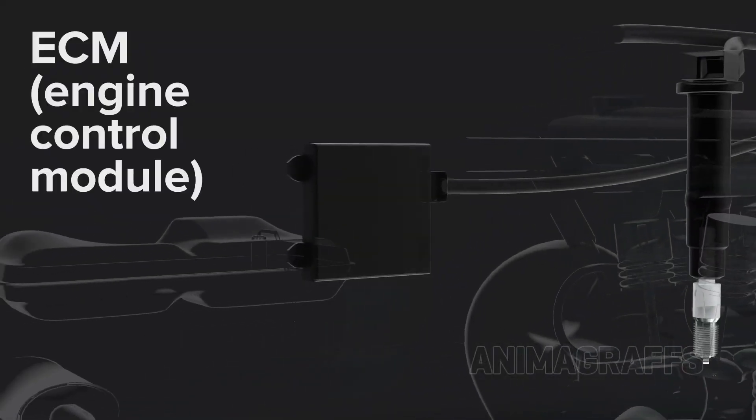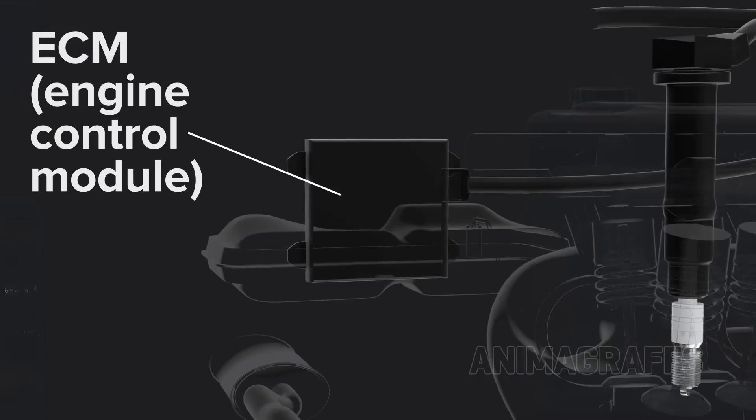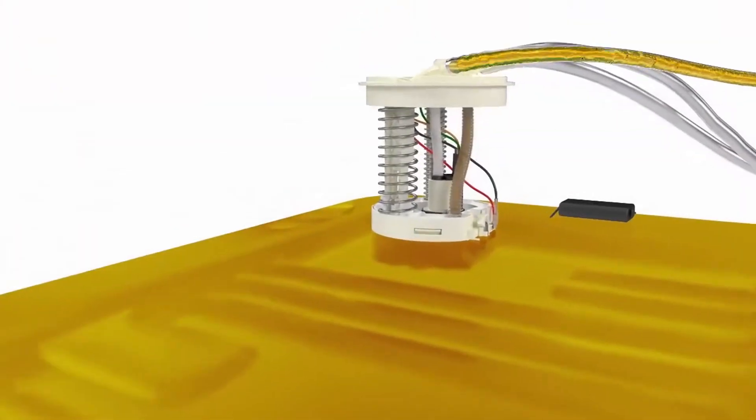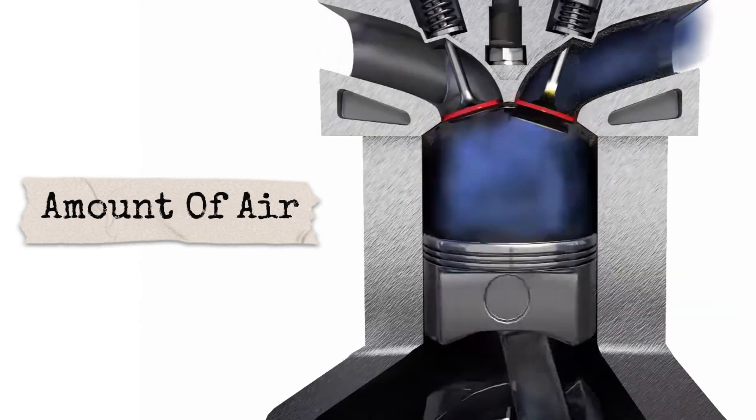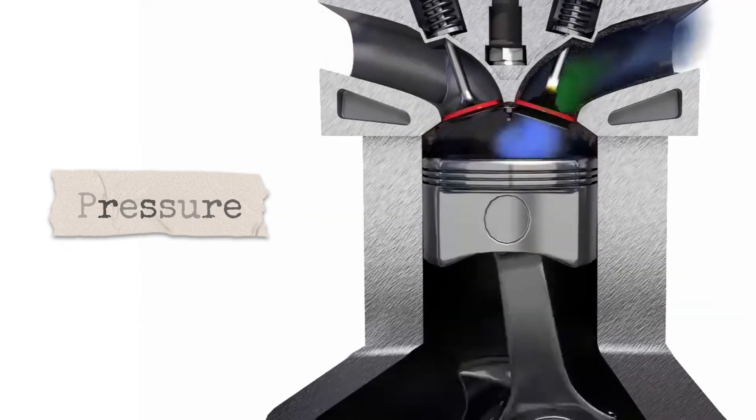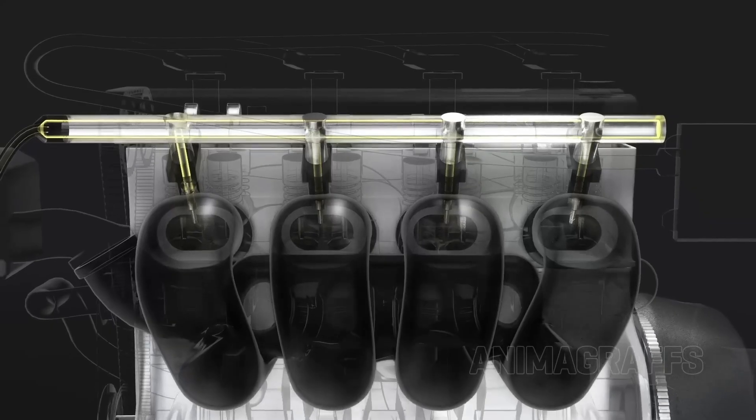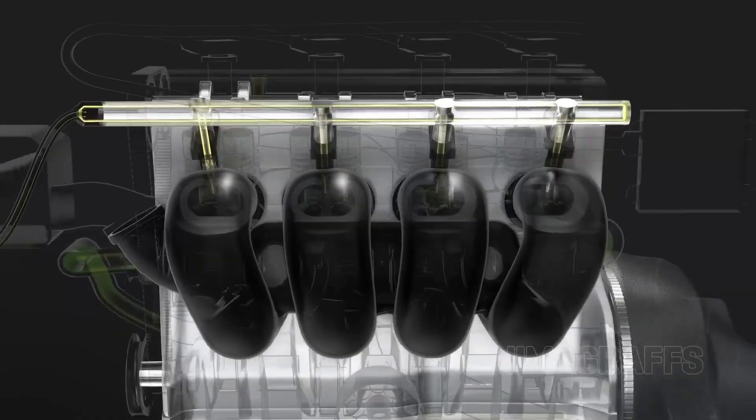The engine control unit, or ECU, tells each injector exactly when and how much fuel to spray, based on information from a bunch of sensors. And these sensors are constantly monitoring everything: the amount of air flowing into the engine, the temperature, the pressure, the throttle position, and even the oxygen levels in the exhaust.